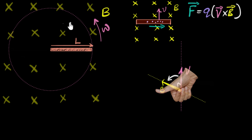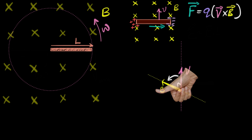So the Lorentz force acting on the electrons pushes them toward the right, and as a result all these electrons will start migrating to the right side, giving you a negative charge there and leaving behind positive charges on the left side. Because there's a charge separation, an electric field is generated and induced, and that produces a potential difference.